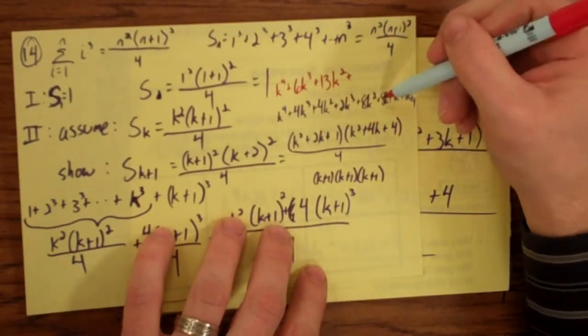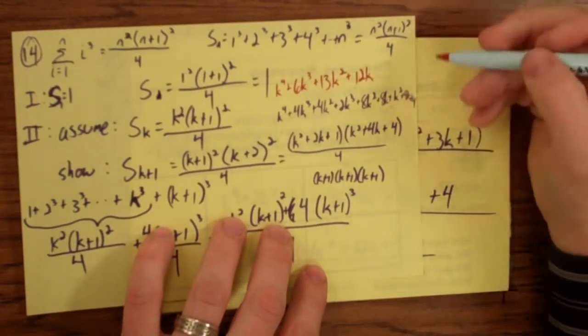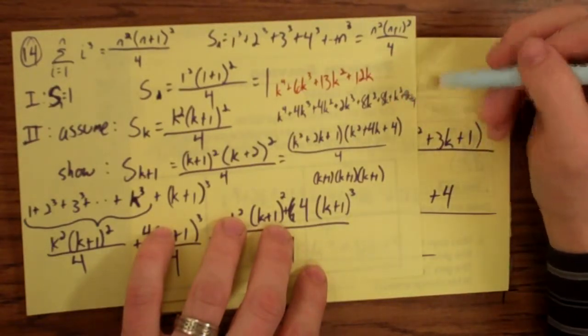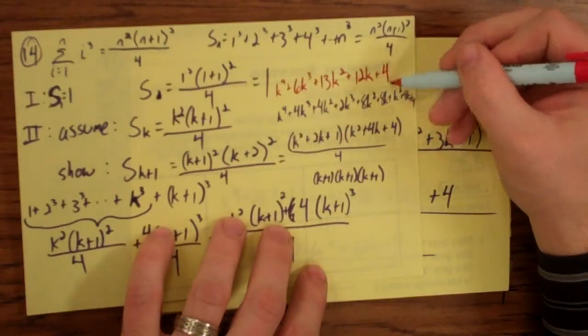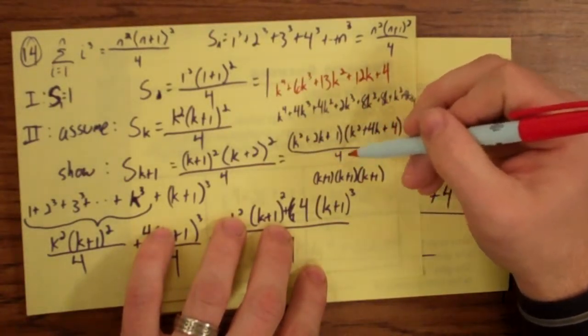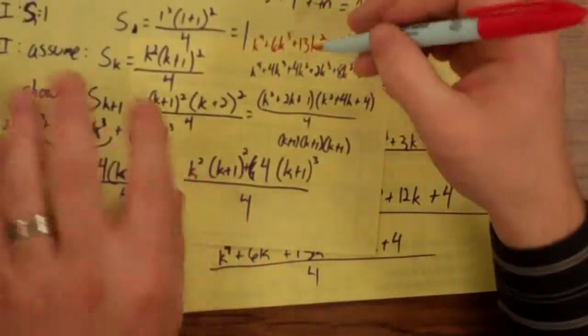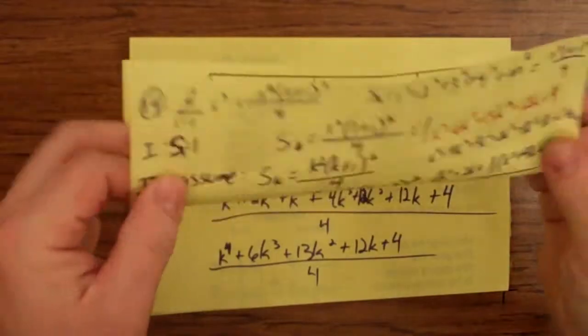Plus, let's see, we've got 8k plus 4k, that's 12k. And then we just have the constant left and there's just a 4. And of course, I'm just rewriting the numerator here. All of this is still over 4.